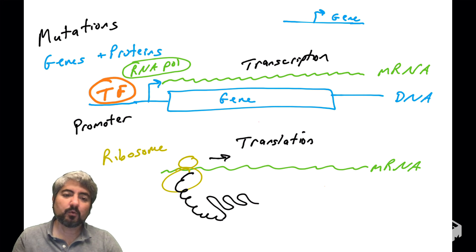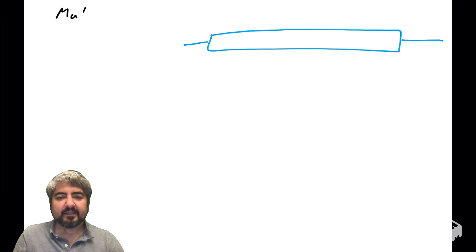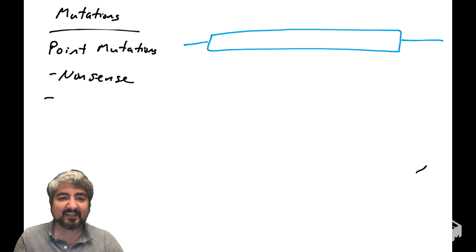So that is a quick review of transcription and translation and the structure of a gene. So again, when I draw a gene, I'm typically drawing that little sort of line with a little arrow above it. And so what I wanted to talk about, and we'll talk about in the next video,